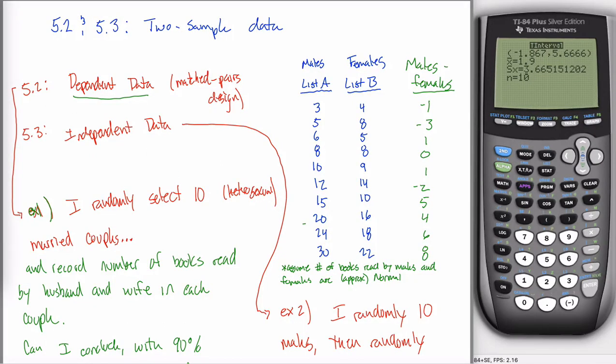Alright, in this example, I want to do something similar to what I did in the previous couple of videos, except now I want to change the setup. So we have these two lists of data, the stuff in blue that was given to us. I think the idea was these were the number of books read per year by a bunch of males and a bunch of females.